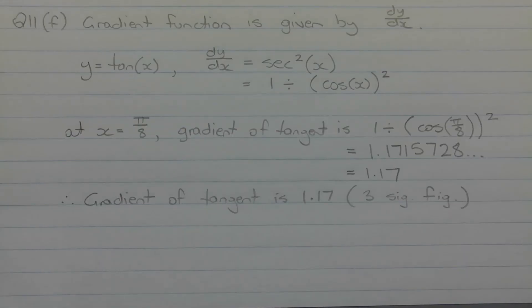The first thing we need to find is the gradient function and this is given by the first derivative dy dx. So given that y is equal to tan x, dy dx is equal to sec squared x which equals one divided by cos x squared.